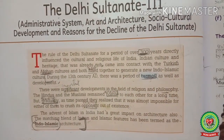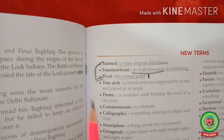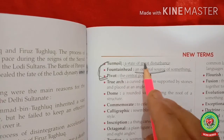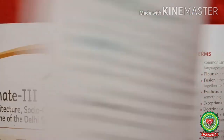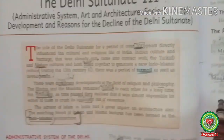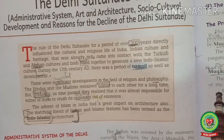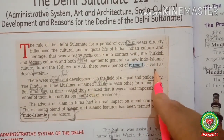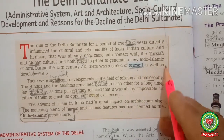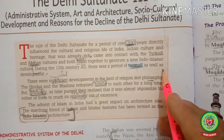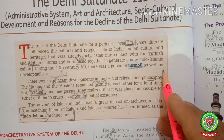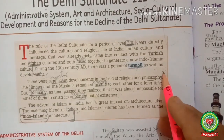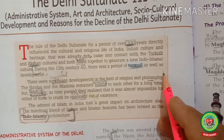For the meaning of turmoil, go to page number 63. In the new terms you will get the meaning: a state of great disturbance. So turmoil means a state of great disturbance. In this paragraph, Turkish means the people of Turkey and Afghan means the people of Afghanistan.